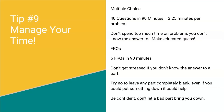You might get part A right, you might get part B, and then not know how to proceed — don't let that panic you. Most students who encounter something they don't know how to do just stop and move on. Don't do that. Always try something. Try never to leave any part completely blank. Even if you could put something down, it could help. If part C asks for a conclusion and you don't have a p-value, make one up — say the p-value is 0.04, I'm going to reject the null because it's less than 0.05. That shows you understand the process.